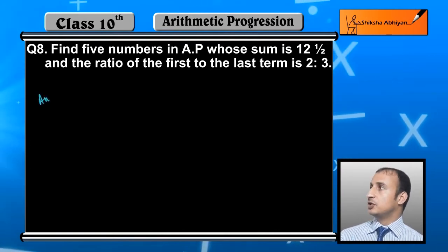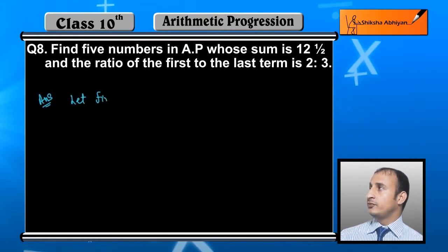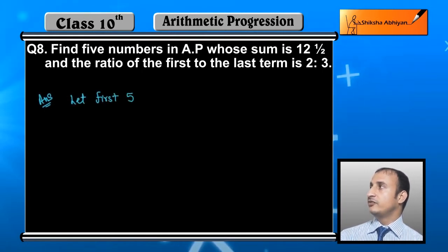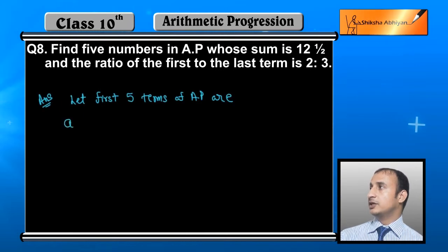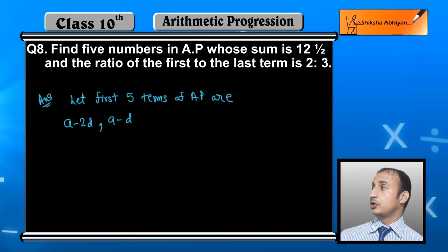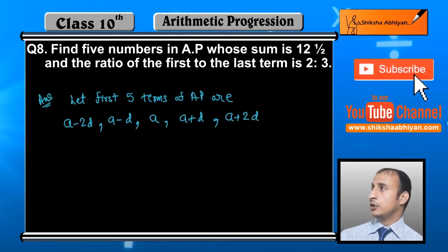First of all हम assume करेंगे ऐसे five numbers AP में। Let the five terms be a minus 2d, a minus d, a, a plus d, a plus 2d। मैंने आपको already बता चुका हूँ जब odd numbers में terms मानने हों arithmetic progression में तो इस तरह मानते हैं। इसी तरह मैंने five numbers मान लिए।